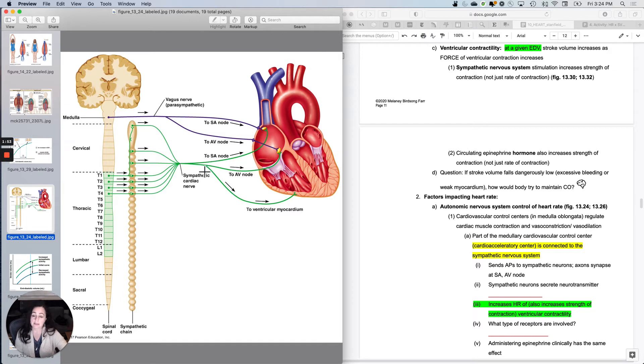So what happens is when sympathetic stimulation goes to the heart, not only does it increase heart rate, it also increases stroke volume. And that's really important. So the sympathetic nervous system will make the wall of the ventricle contract harder. This is ventricular contractility.